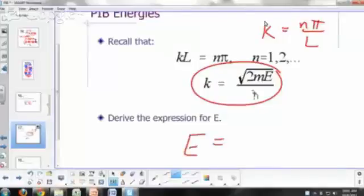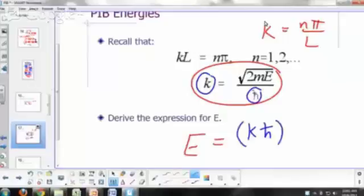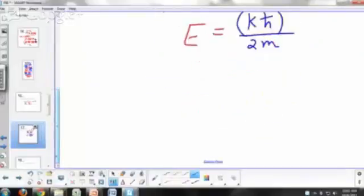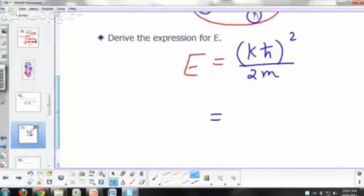Energy will just be equal to multiply k and h bar and then square it and divide by 2m, okay? So it's just going to be k squared h bar squared over 2m.